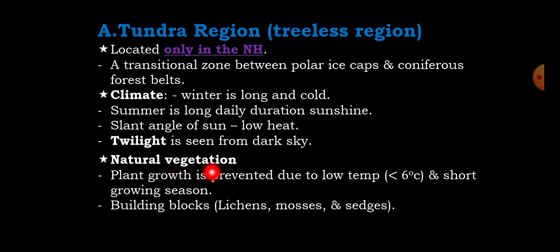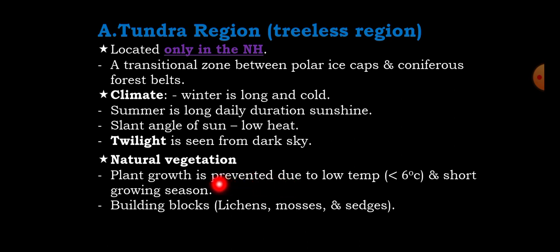The natural vegetation of the tundra region is called building blocks. It includes lichens, mosses, and sedges. Generally, plant growth is prevented or limited in the tundra region due to low temperature and short growing seasons.